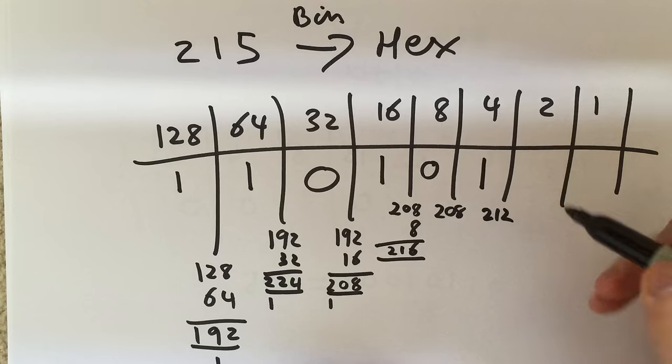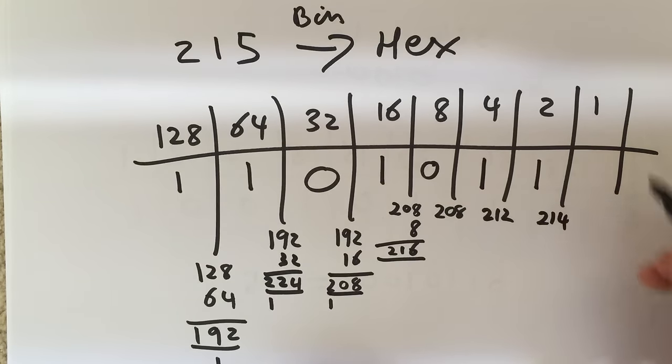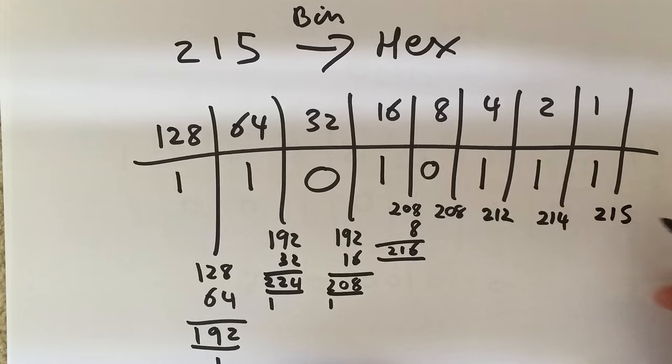Can I add on 2 to that? Yes, I can. So that gets me up to 214. Can I add the 1 on to that? Yes, I can. Which gets me up to my 215, my denary number.